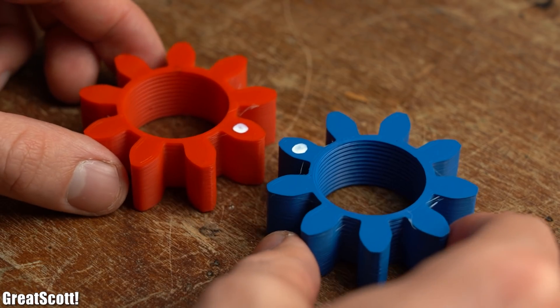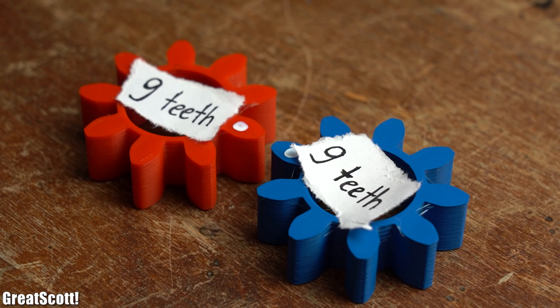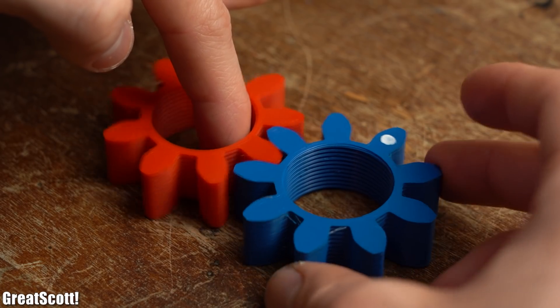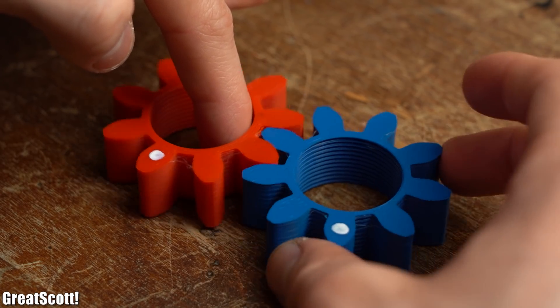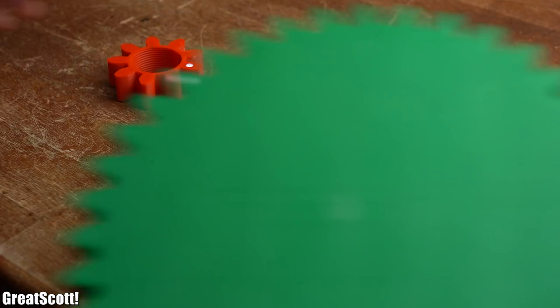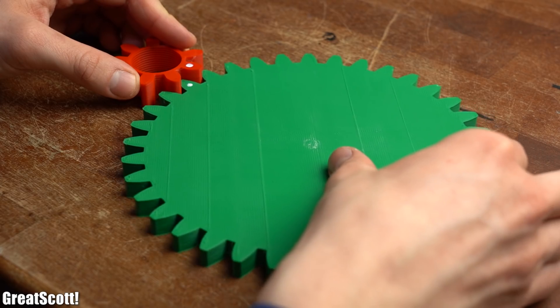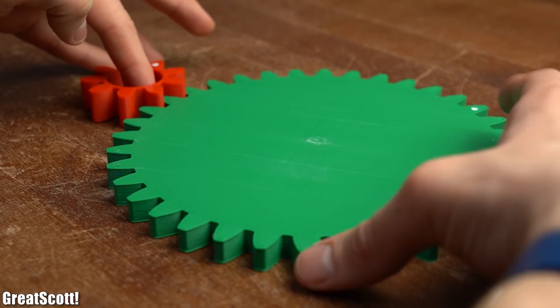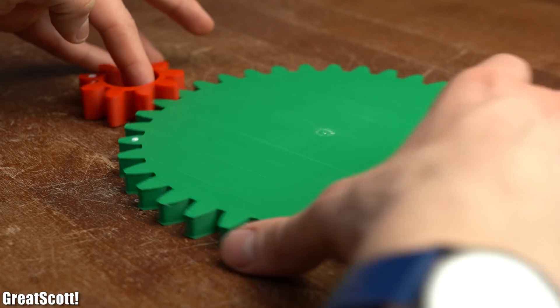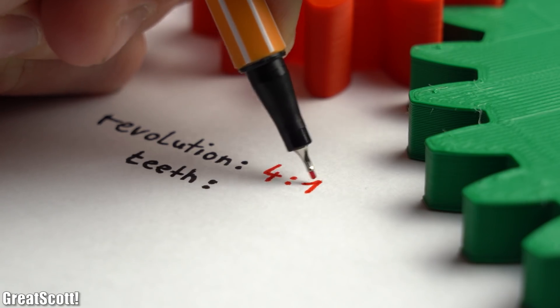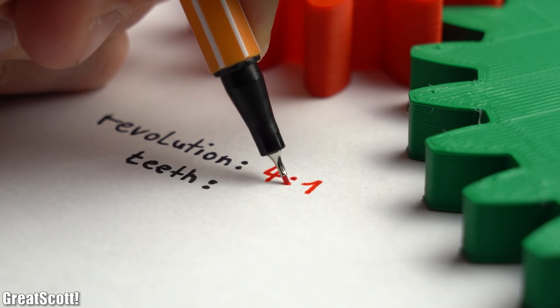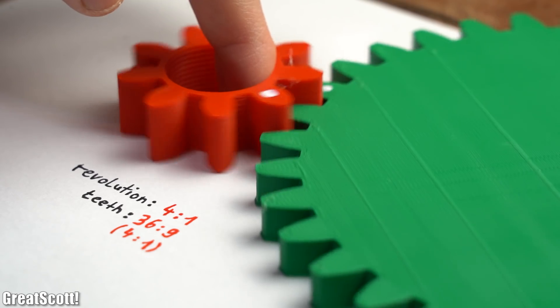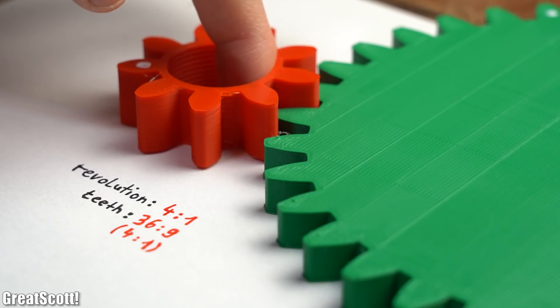You see, if we take 2 gears with the same amount of teeth, which is in this case 9, bring them together and spin one of them, then you can see that the other one performs the exact same amount of revolutions per minute as the one that is turning. But if we replace the spinning one with a bigger gear that in this case has 36 teeth, then you can see that the smaller gear performs 4 complete revolutions while the bigger gear only performed one. This revolution factor of 4 to 1 is the same factor as the teeth factor between the gears, which is 36 to 9, so also 4 to 1. And that is very simplified how you can change the RPM of motors or generators.